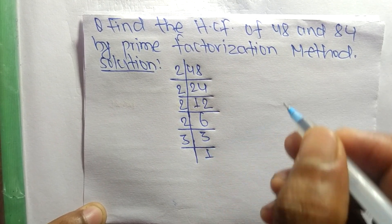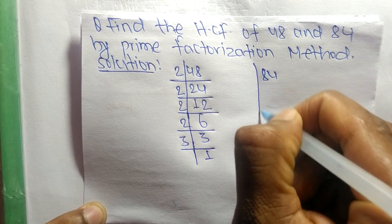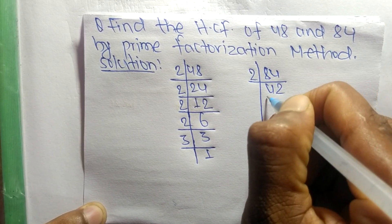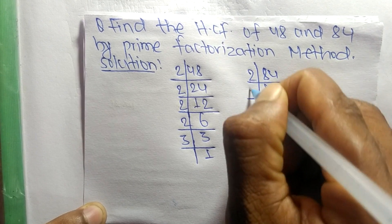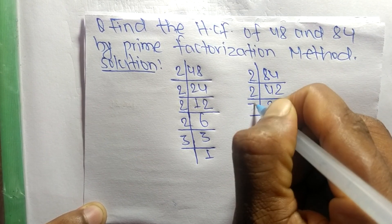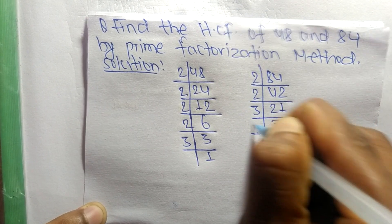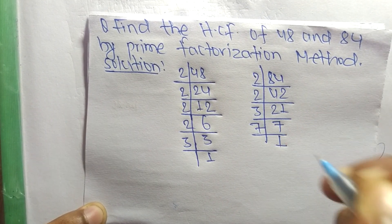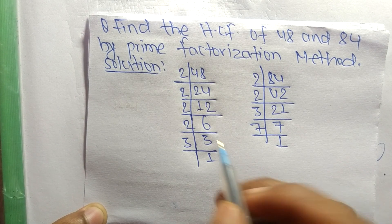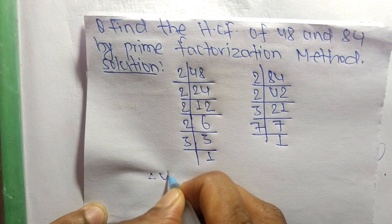Likewise, the prime factors of 84 are: 2 times 42 equals 84, 2 times 21 equals 42, 3 times 7 equals 21, and 7 times 1 equals 7.